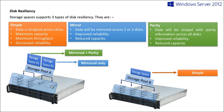Parity resiliency allows up to two disks to fail at the same time without losing information. When the disks are replaced, they are brought back into the pool and the data is written back to them. For example, using three disks with parity resiliency — if two disks fail simultaneously, no information is lost, and when they're returned to the pool the data will be written back.